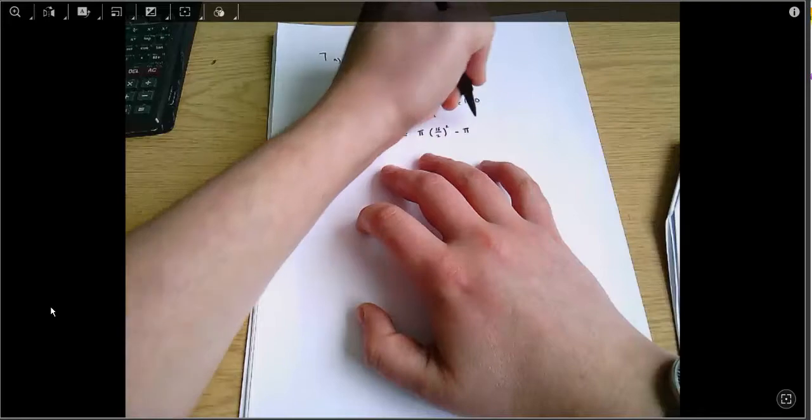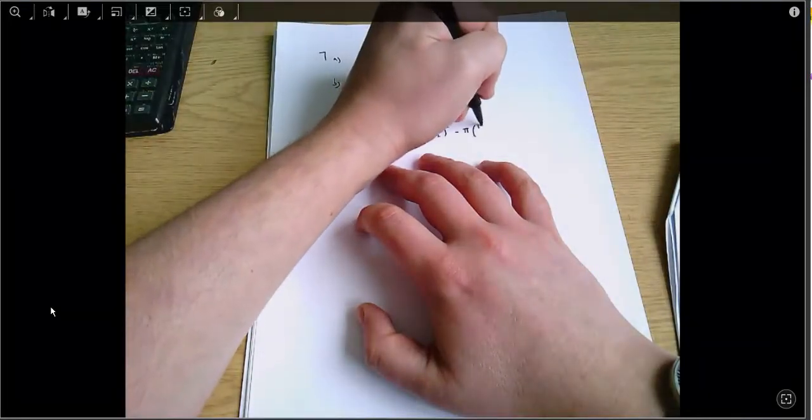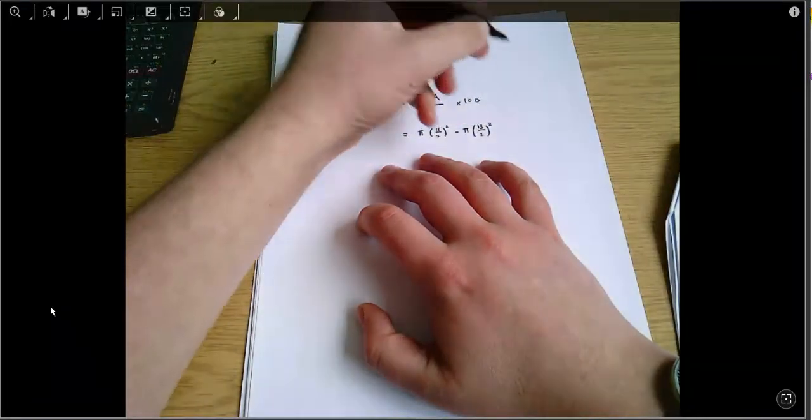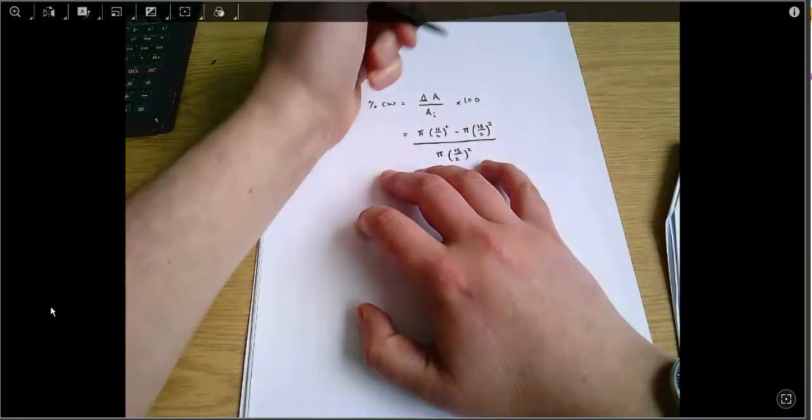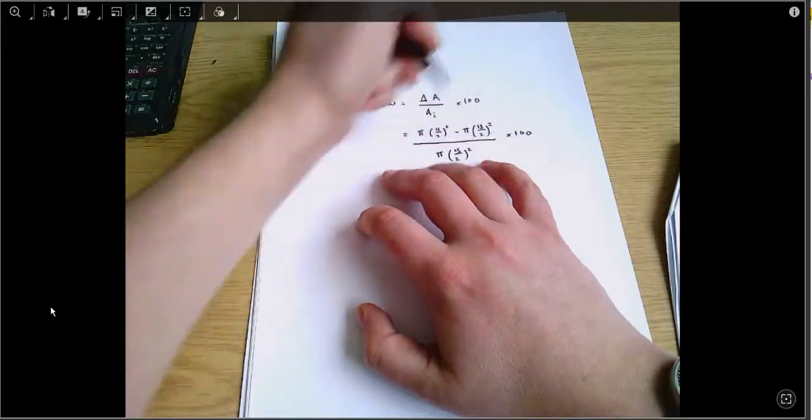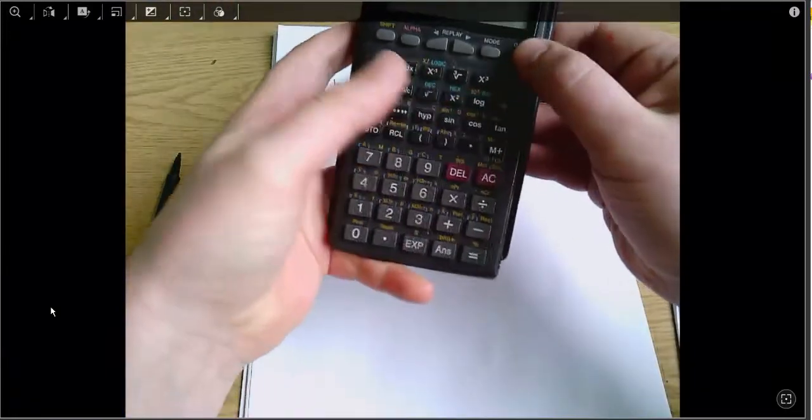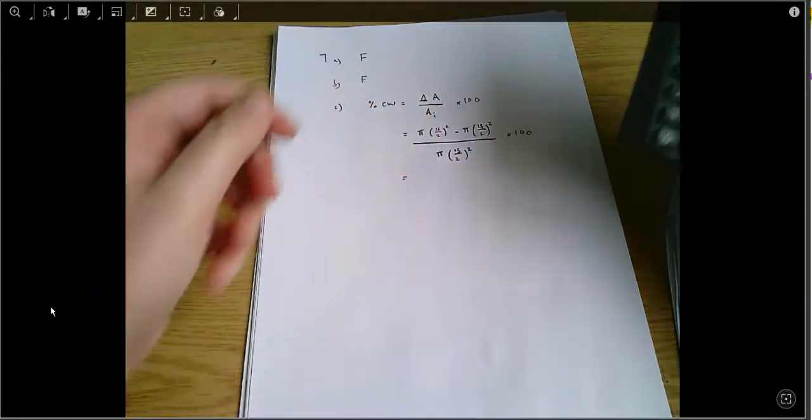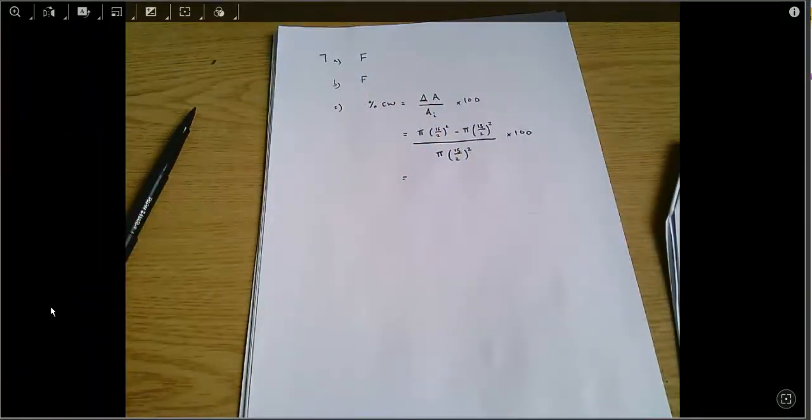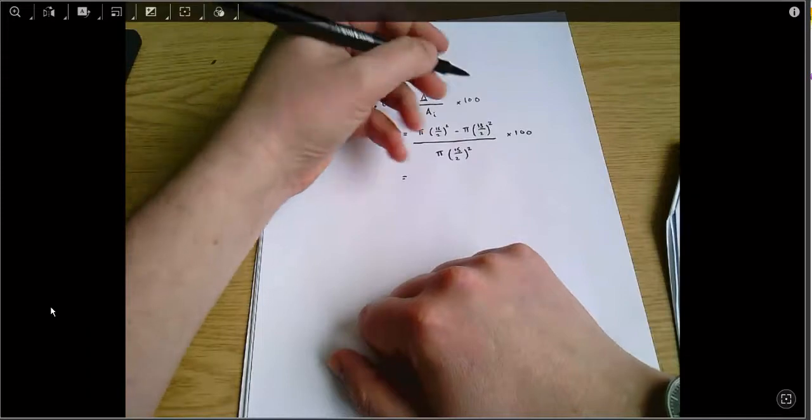So that's pi times 15 over 2 squared minus the second area 13 over 2 squared, all over the initial area pi times 15 over 2 squared, multiply all of that by 100. And when I put that into my calculator I can cancel out all of the pi's and all of the divided by 2's.